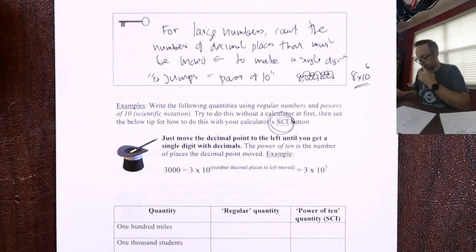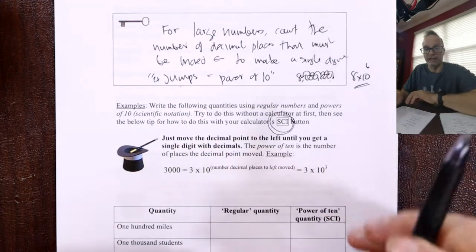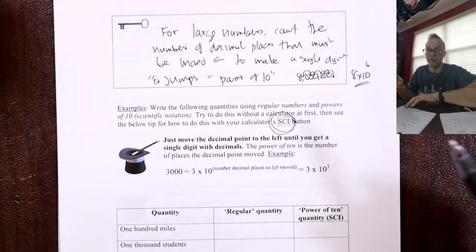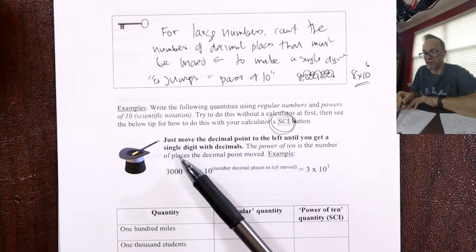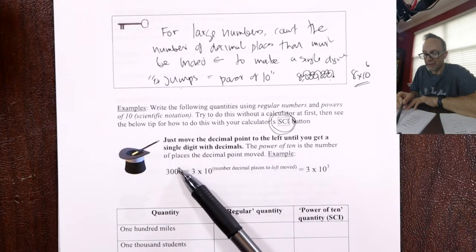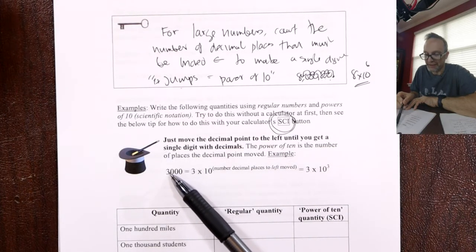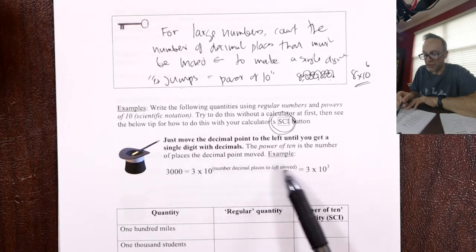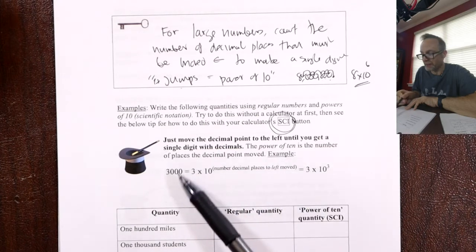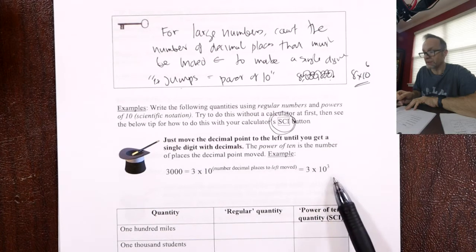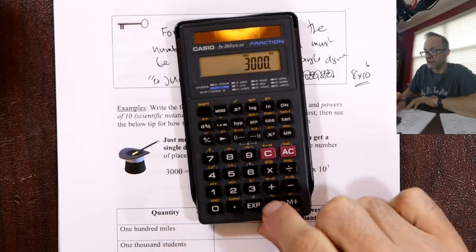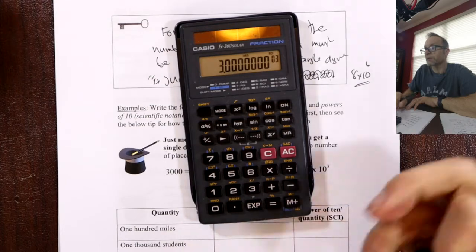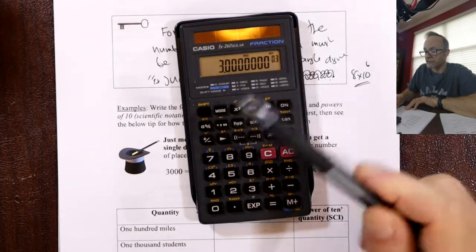It's a good way to check — put your calculator in scientific notation mode, or just do the manual jumping. Looking at this first example: move the decimal place to the left until you get a single digit. The number of jumps is the power. So 3,000 — 3 jumps — is 3 times 10 to the 3. If I put that in the calculator: 3 times 10 to the 3.